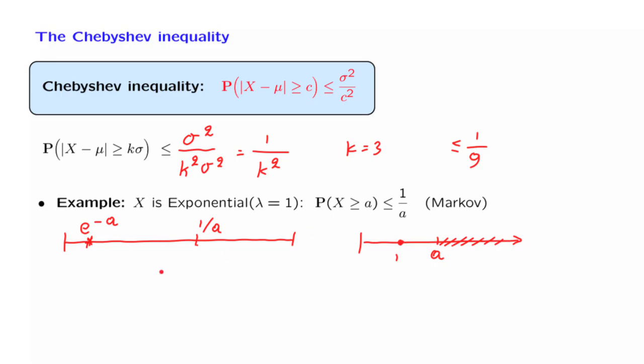That is, we write the probability that x is larger than or equal to a as the probability that the distance of x from the mean is larger than or equal to a minus 1.